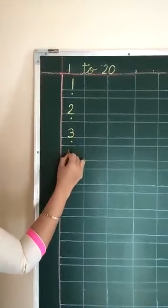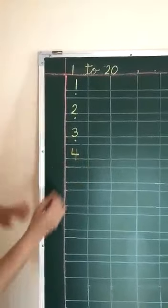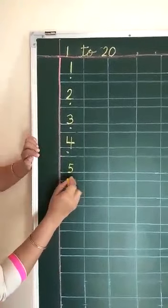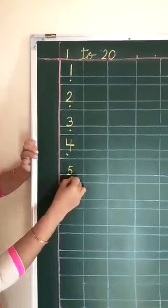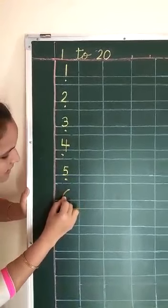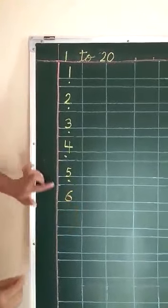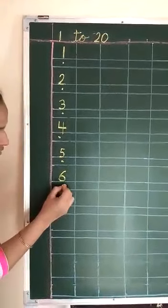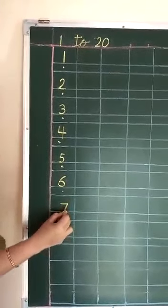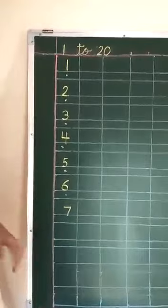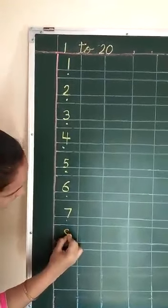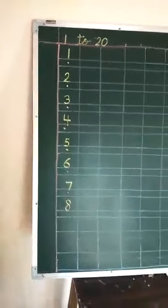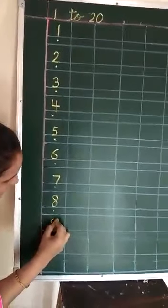Write down 4. After 4, put 1 dot. Write down 5. Leave 1 box — put a small dot here. Then write 6. You have to touch the line and write. After 6, which number comes? 7. Put 1 dot. Write down 7. After 7, which number comes? 8. Put 1 dot. Write down 8.